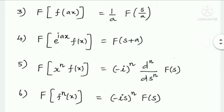The fifth property: Fourier Transform of x^n times f(x) equals (−i)^n times d^n/dS^n of F(S). And the sixth: Fourier Transform of the nth derivative f^(n)(x) equals (−iS)^n times F(S).